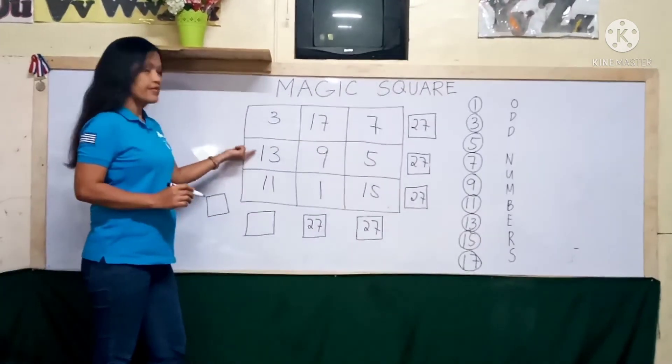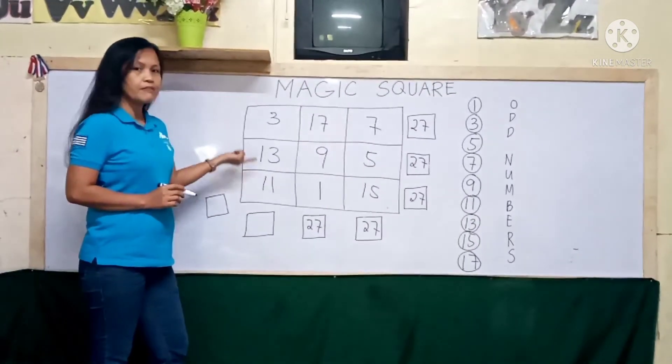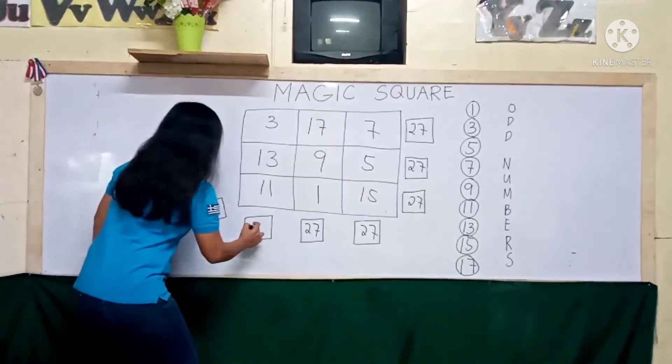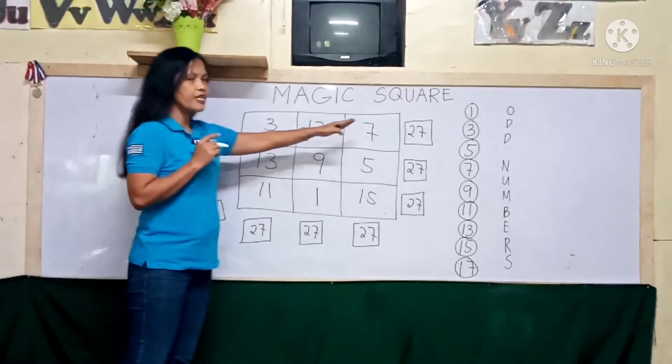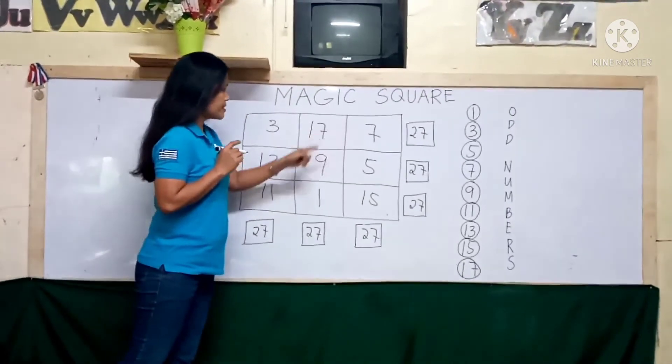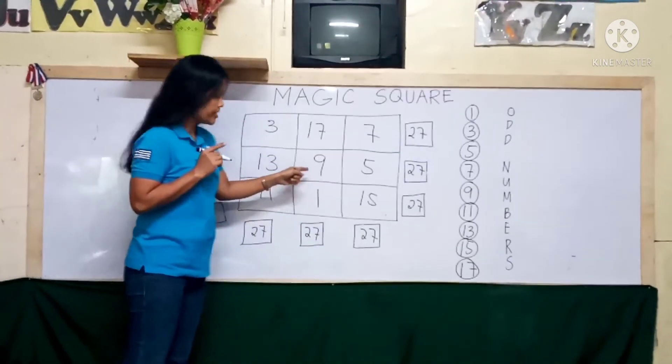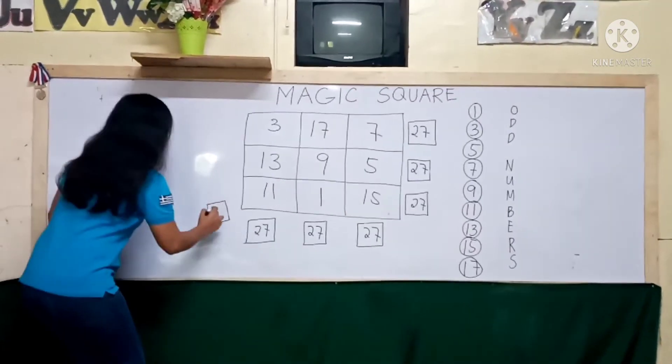3 plus 13, 16, plus 11, 27. Lastly, let us see the diagonal sum. 9 plus 7, 16, plus 11, 27.